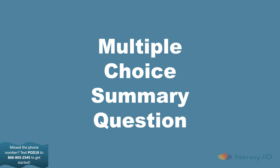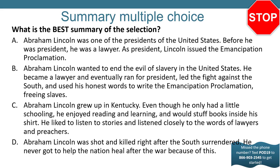It's time for us to answer a multiple choice summary question. You're looking for the answer that contains the cause, the problem, and the solution, plus a few details from the passage. What is the best summary of the selection? A: Abraham Lincoln was one of the presidents of the United States. Before he was president, he was a lawyer. As president, Lincoln issued the Emancipation Proclamation. B: Abraham Lincoln wanted to end the evil of slavery in the United States. He became a lawyer and eventually ran for president, led the fight against the South, and used his honest words to write the Emancipation Proclamation, freeing slaves. C: Abraham Lincoln grew up in Kentucky. Even though he only had a little schooling, he enjoyed reading and learning and would stuff books inside his shirt. He liked to listen to stories and listened closely to the words of lawyers and preachers. D: Abraham Lincoln was shot and killed right after the South surrendered. He never got to help the nation heal after the war because of this. Pause your video and text in your answer now.